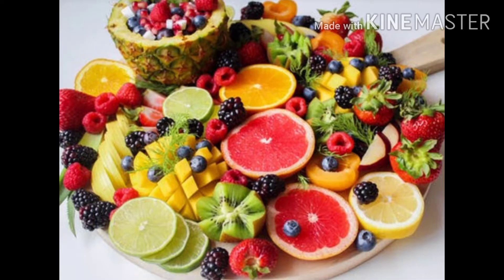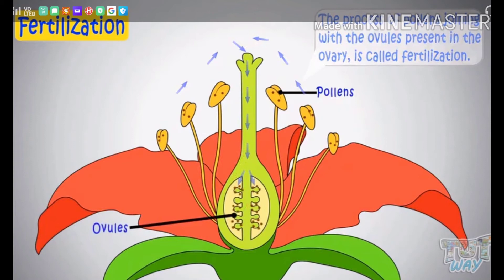After pollination, the flower develops into a fruit. Fruits contain seeds. A fruit may contain one, few or many seeds. The process of pollens joining with the ovules present in the ovary is called fertilization.